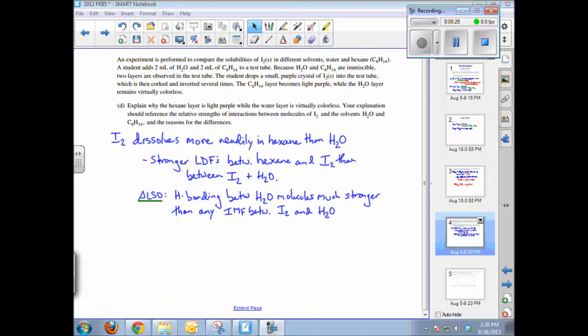Part D of the question is a little more complex. Let me read and summarize the question. An experiment is performed to compare the solubilities of iodine in different solvents, water and hexane. And essentially at the end of the question, they tell you the results. The hexane layer becomes light purple while the water layer remains virtually colorless.